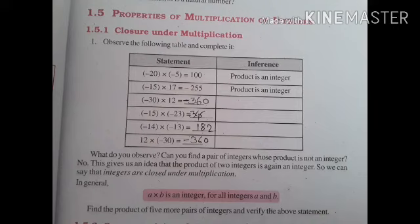Product of 2 negative integers is a positive integer. Product is an integer. Next example: 12 into minus 30 is equal to minus 360. Product is an integer. What do you observe? Can you find any pair of integers whose product is not an integer? No. This gives the idea that the product of two integers is again an integer. So we can say that integers are closed under multiplication. Generally, A into B is an integer for all integers A and B.